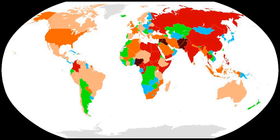It is an attempt to systematically rank the nations of the world according to terrorist activity. The index combines a number of factors associated with terrorist attacks to build an explicit picture of the impact of terrorism, illustrating trends, and providing a data series for analysis by researchers and policymakers. The GTI is based on data from the Global Terrorism Database which is collected and collated by the National Consortium for the Study of Terrorism and Responses to Terrorism at the University of Maryland.